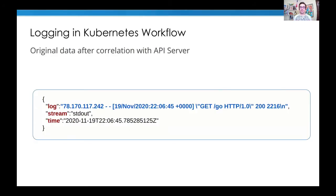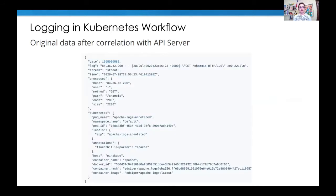Correlation is really important. If we take log data — a log message, a stream key, and a timestamp — how do we correlate all this in Kubernetes? Our data gets transformed from an unstructured format to a structured format, like JSON, where we can see the pod name, namespace, pod ID, labels, and so on. Correlating this information is critical — otherwise it's very hard to find the right data at a specific moment from a specific place.